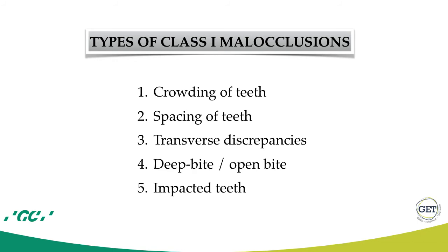The types of Class 1 malocclusions can be classified as crowding of teeth, spacing of teeth, transverse discrepancies, deep bite or open bite, and impacted teeth.